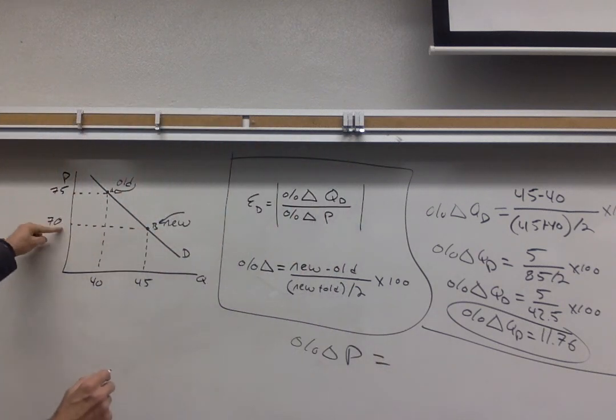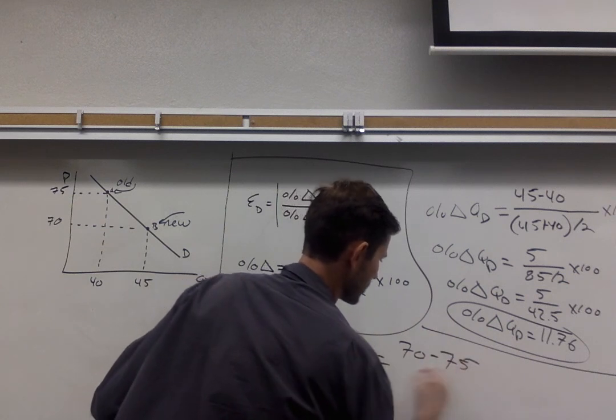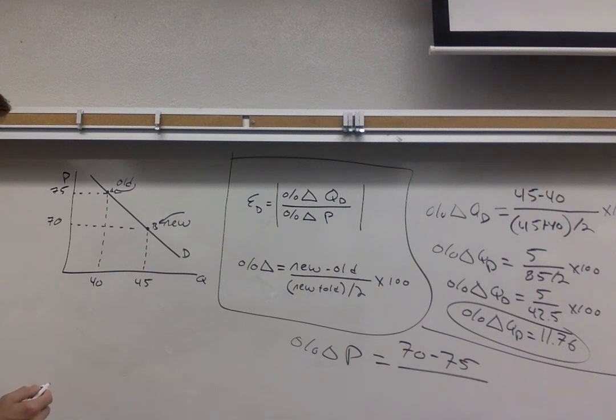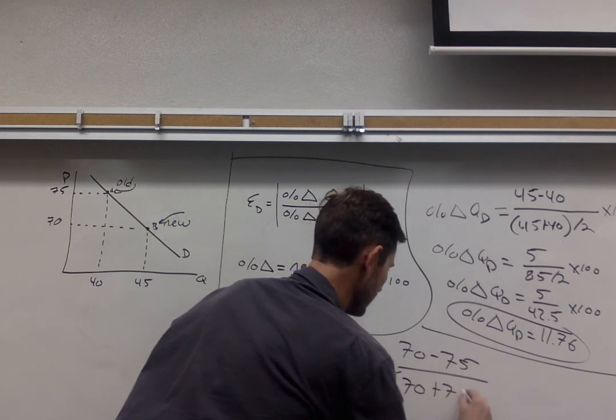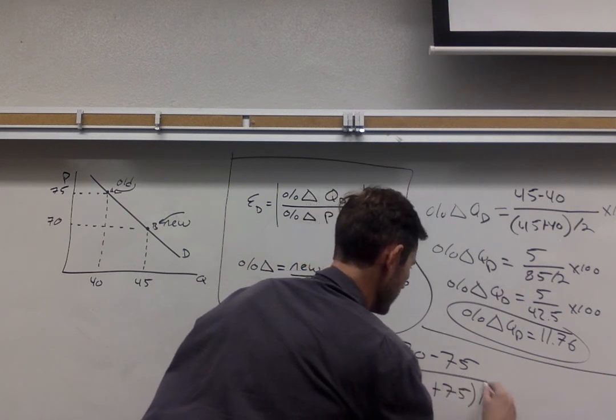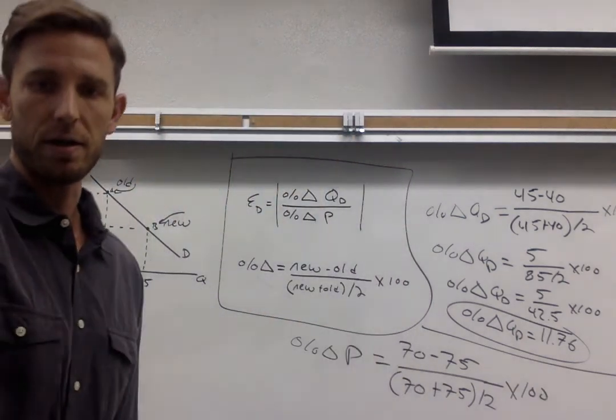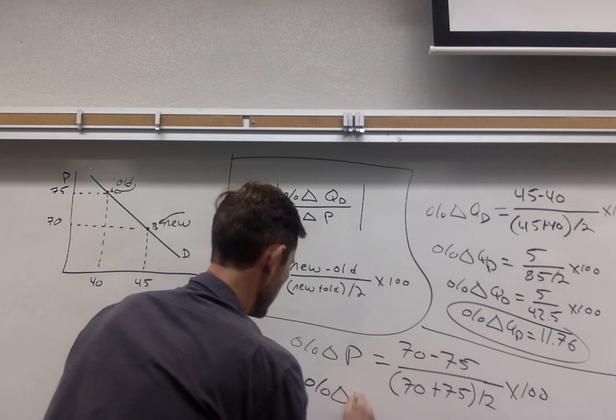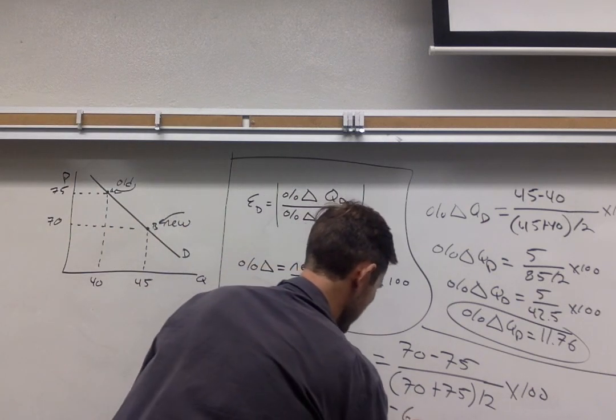So now my new price minus my old is going to be 70 minus 75. We'll see straightaway there's going to be a negative percentage change on the price. We're going to divide that by the average of these two, which I'm going to get by adding together 70 plus 75 divided by 2 and then multiplying that by 100. Alright. Once you've done that, this should simplify to percentage change in price of negative 6.9%.